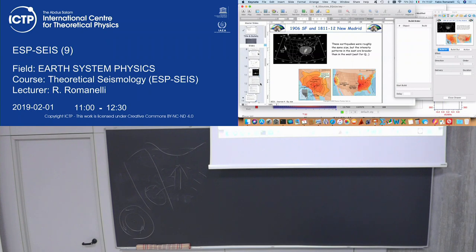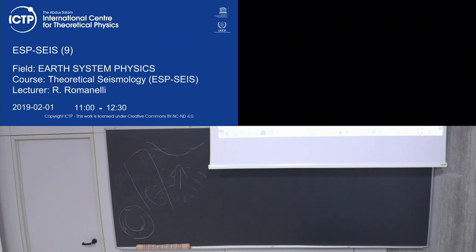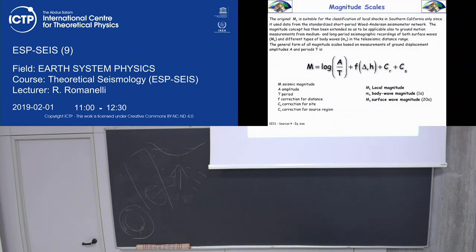If your instrument is located on a site that is locally amplifying or de-amplifying waves, you should take care of this. That's why, in principle, you should put your instrument on bedrock, on solid rock. But if it's not possible, you should apply correction factors. CS is correction for site; CR is correction for source region.